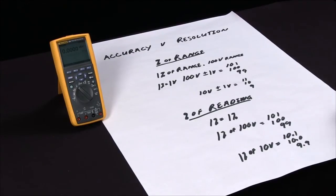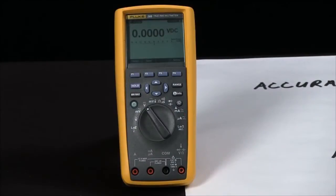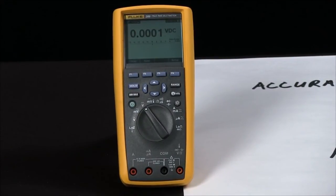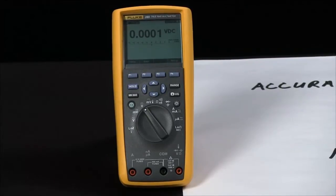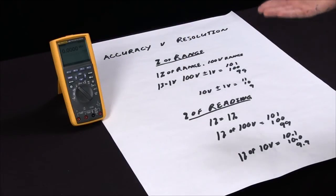And here we have our Fluke 289, which is actually one of the most accurate and highest resolution handheld multimeters you can get. It can actually outperform a lot of bench multimeters.